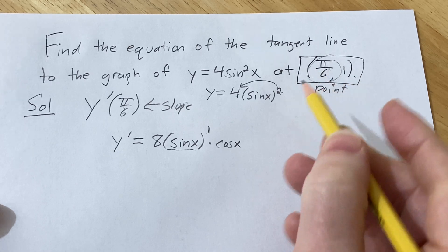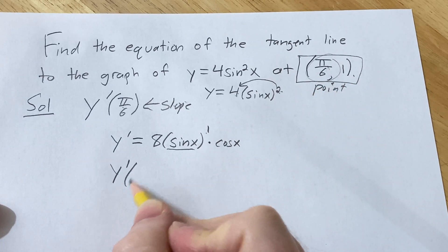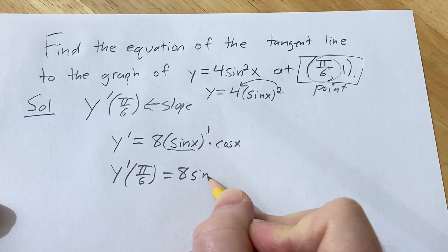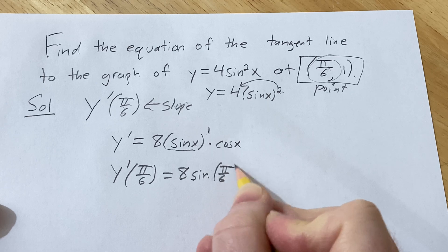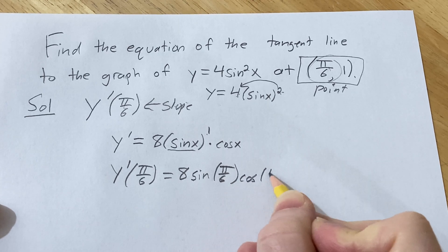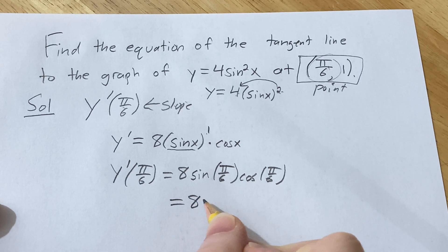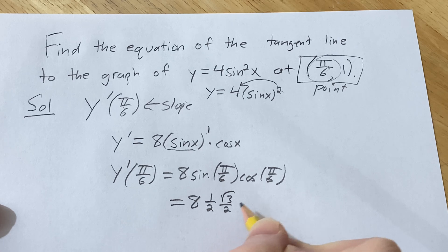Now we just have to plug in the x value. So y'(π/6) = 8 sin(π/6) cos(π/6), so this equals 8 times—sine of π/6 is 1/2, cosine of π/6 is √3/2.